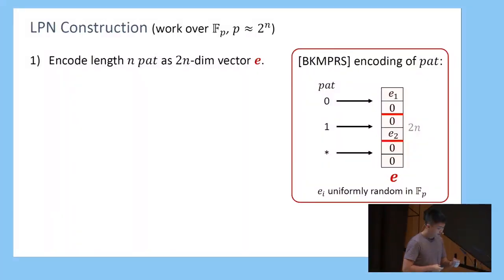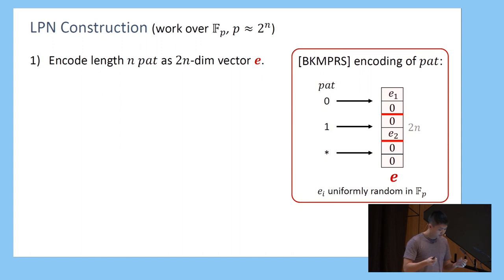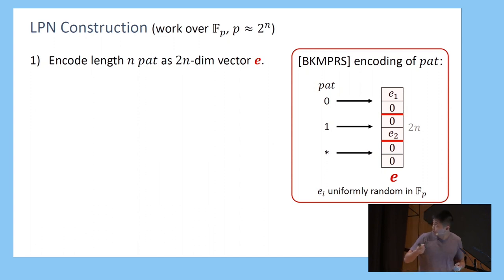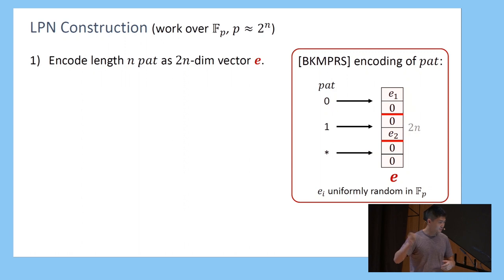The encoding scheme is pretty simple. We break E into n consecutive blocks, each of two entries, where the i-th block corresponds to the i-th position of the pattern. If the i-th position is a 0, we put a uniformly random value in the top position. If it's a 1, we put a uniformly random value in the bottom position. If the pattern is a wildcard, we put two zeros. This correspondence is important — I'll come back to it a lot.